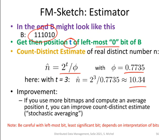And if you're doing this, you will see this does not work very well. What you need to do in addition is a technique called stochastic averaging here. You're doing or you're applying this FM sketch or you're creating multiple FM sketches, multiple B arrays for different hash functions.